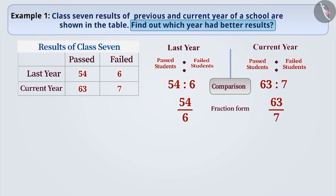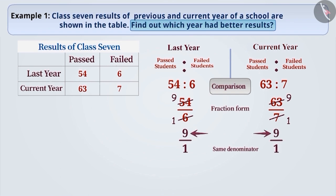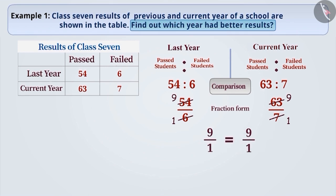Now convert them into fractions with the same denominator. We see that 54 can be divided by 6, which will reduce the fraction to 9 by 1. Similarly, 63 can be divided by 7 and will also reduce the fraction to 9 by 1. Now that the denominator is the same for both fractions, compare their numerators. We see that the numerators of both fractions are equal. Therefore, both fractions are equal.